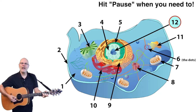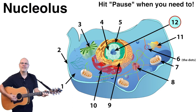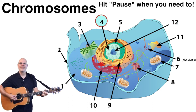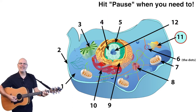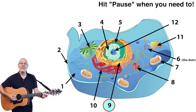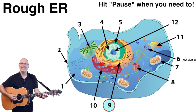Let's do the first four together. Number twelve: nucleolus. Number four: ribosomes. Number eleven: lysosomes. Number nine: rough ER.